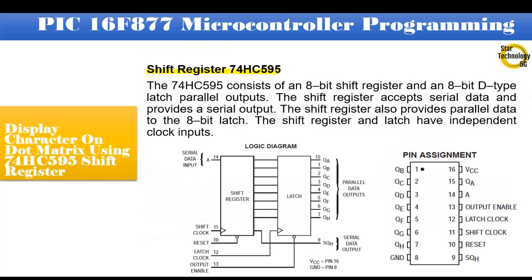The 74HC595 consists of an 8-bit shift register and an 8-bit D-type latch with parallel outputs. The shift register accepts serial data and provides a serial output, and also provides parallel data to the 8-bit latch. The shift register and latch have independent clock inputs. Pin 14 accepts serial data and provides serial output at pin 9. Pin 11 is the shift clock, pin 12 is the latch clock, and pin 15 along with pins 1 to 7 are parallel data outputs. Here is the pin diagram of the 74HC595 shift register.